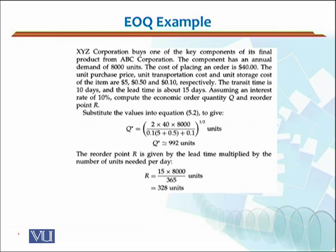The cost of placing an order is $40. So, the ordering cost would be $40. The unit purchase cost, purchase price, transportation cost and unit storage cost of the items are $5, $0.50 and $0.10 respectively.